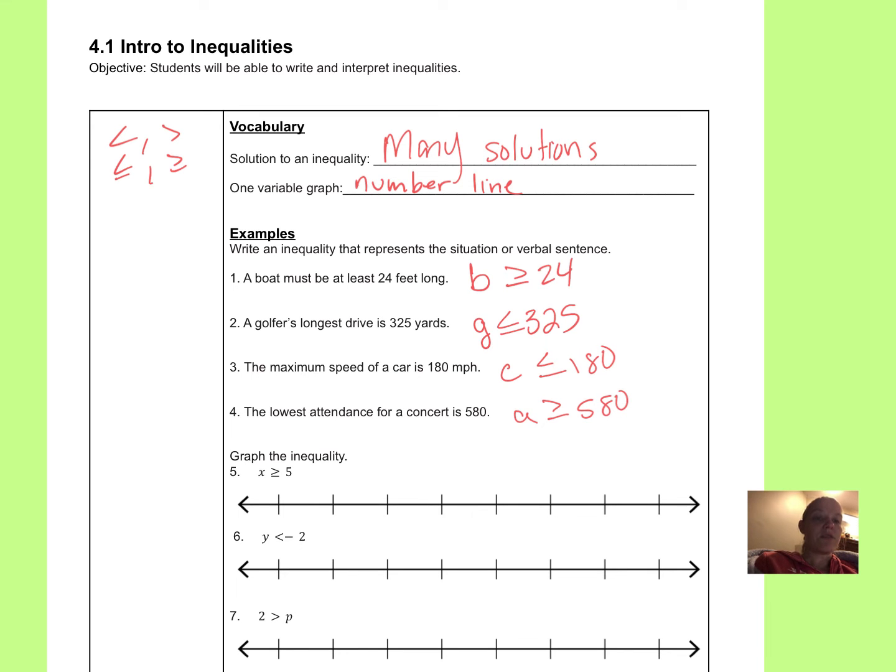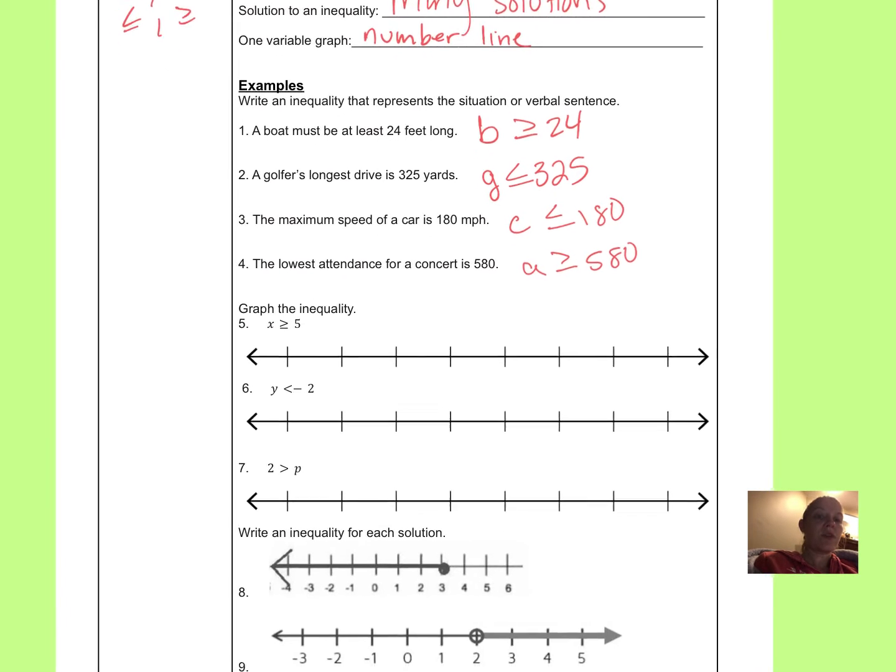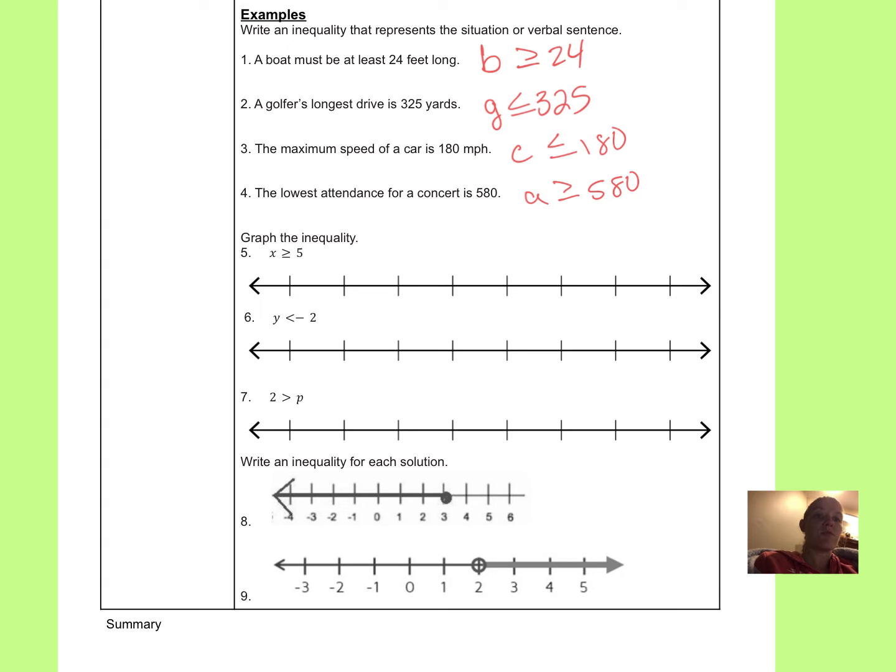Now we're going to graph these on a number line. So if we've already solved whatever equation we're solving, we get the solution x is greater than or equal to 5. So the easiest way to do is we're going to put the 5 in the middle, and I'll finish my number line 6, 7, 8, 9, and then I go to the left, 5, 4, 3, 2, and so on. So we do have the equal to part in this one. That means I'm going to fill in that circle at the 5, and I need x values that are greater than 5.